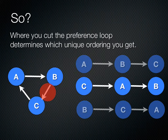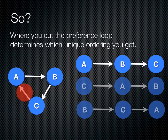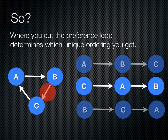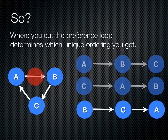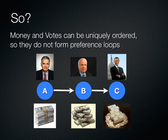If I start with carrots and apples, I'll end up choosing berries. And if I start with apples, I'll end up with carrots. Where you start your decision-making process with a preference loop determines what unique ordering you get when you count up votes or count up money.